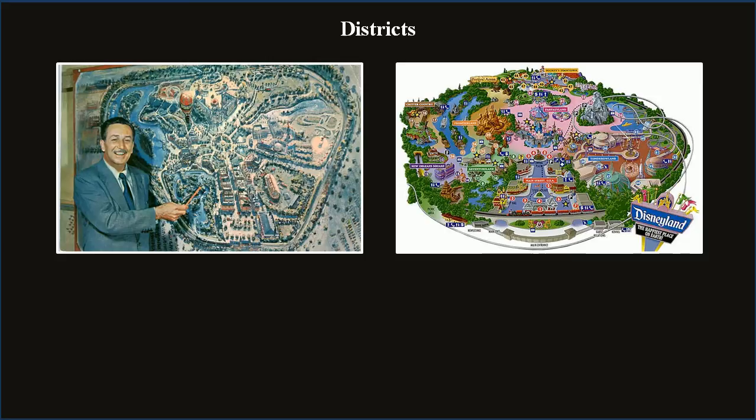Walt Disney and Vice Chairman Marty Sklar came up with Mickey's Ten Commandments for a great product: One, know your audience. Two, wear your guest shoes — don't forget the human factor. Three, organize the flow of people and ideas. Four, create a weenie, which we talked about as landmarks. Five, communicate with visual literacy. Six, avoid overload — create turn-ons. Seven, tell one story at a time. Eight, avoid contradictions and maintain the identity. Nine, for every ounce of treatment, provide a ton full of treat. And ten, keep it up.